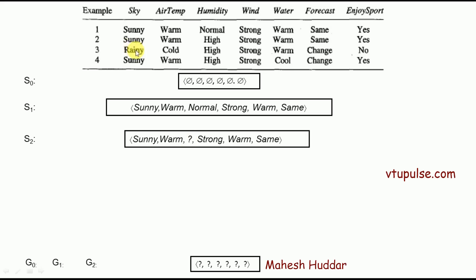Considering the next example, which is a negative example. When it is a negative example, we first go to the specific boundary and check consistency. The hypothesis contains sunny, but the example contains rainy — rainy will not match sunny. Because there is no match, the example is negatively classified, and we are expecting negative classification. So it is perfectly consistent, and we retain the same hypothesis as S3.